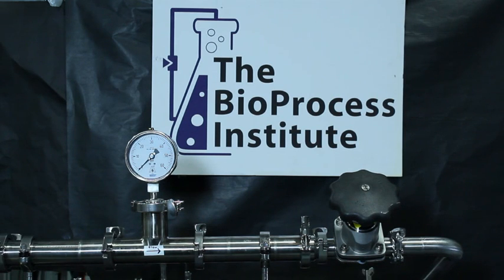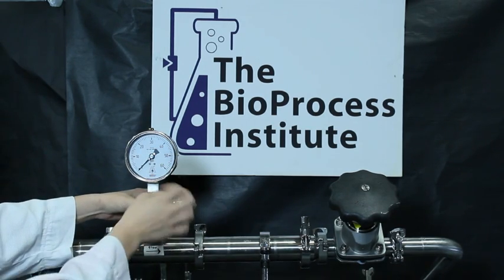Gauges are mounted in this upright vertical position to allow for ease of access for calibration and maintenance by technicians. Let's take off our gauge to do some routine maintenance calibration.